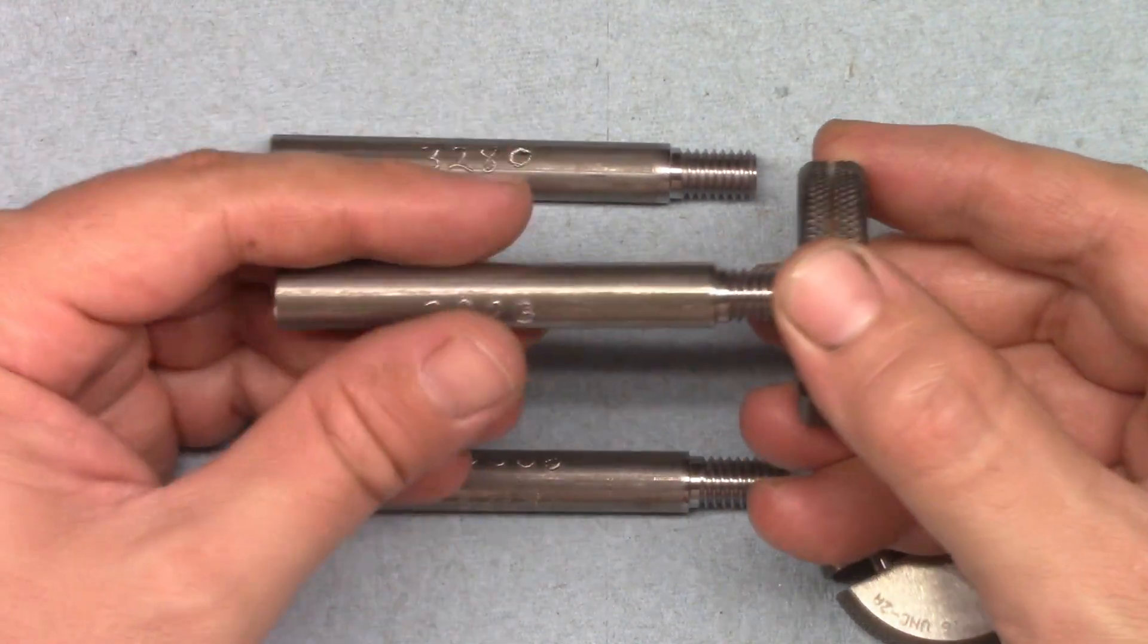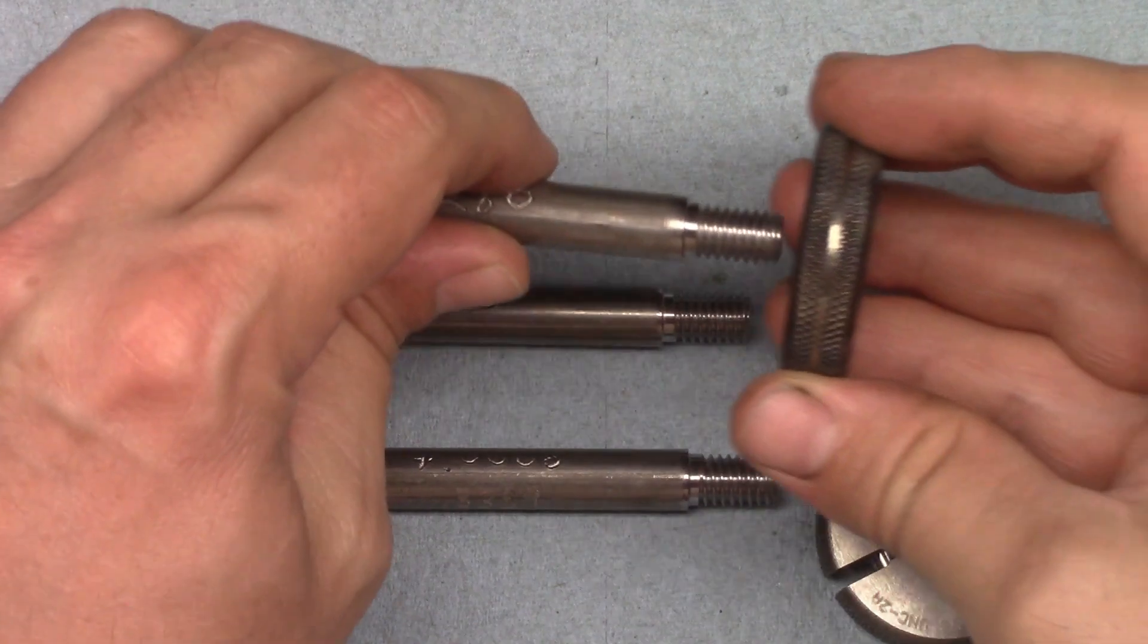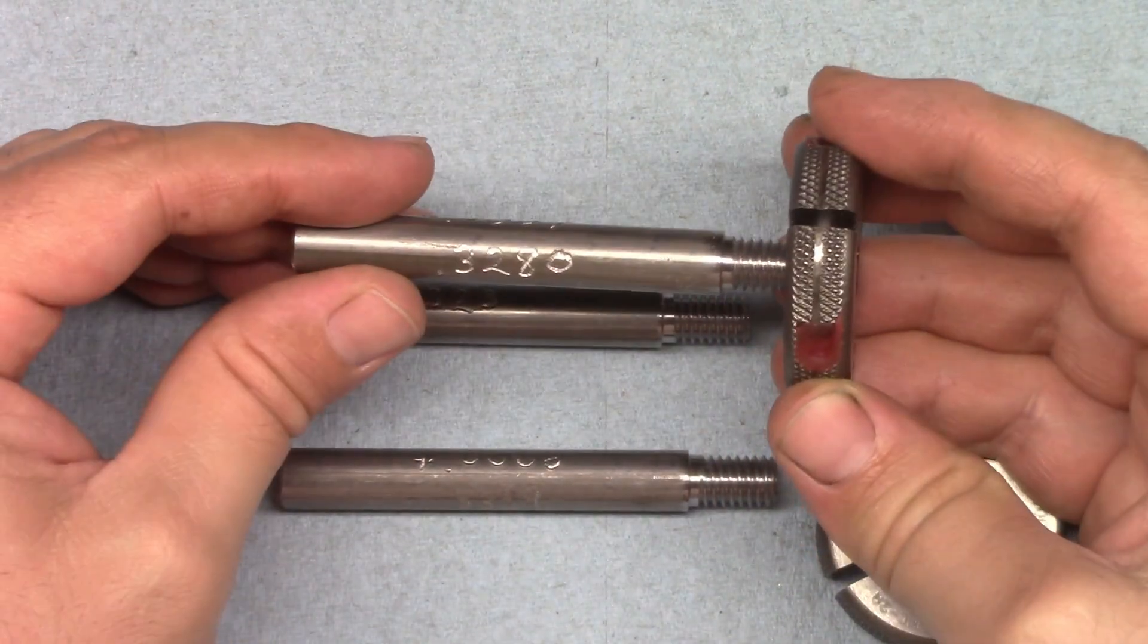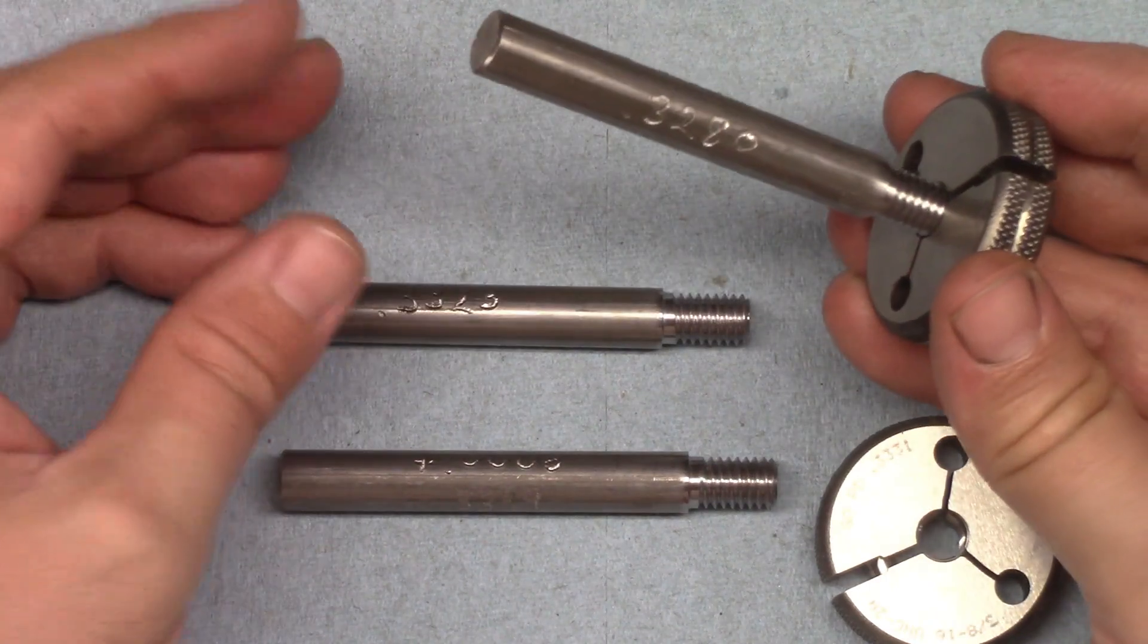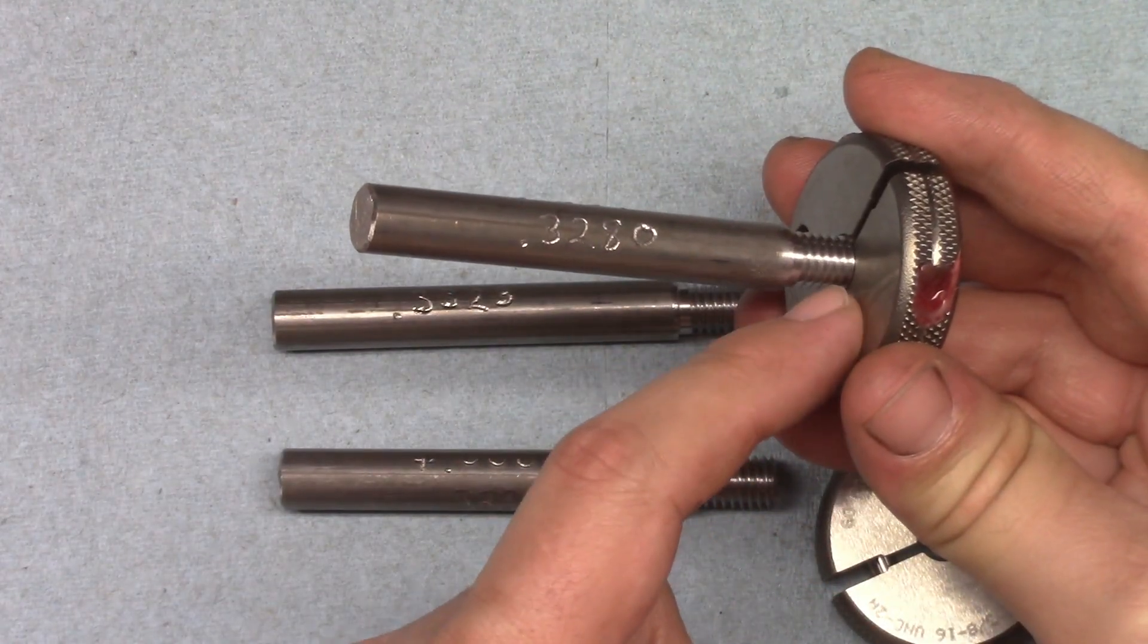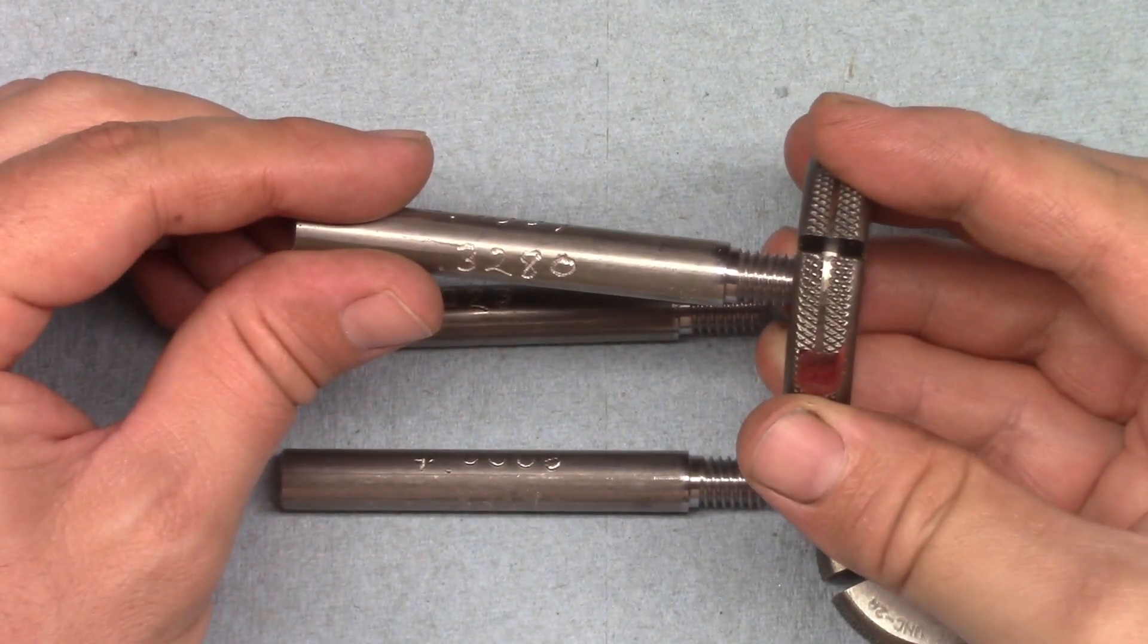However, if it does, then you've cut too far and the part is scrap. It's okay for the gauge to start threading onto the part. That's just the first threads hooking together and the extra clearance from the chamfer. You just don't want the gauge to thread on very far.